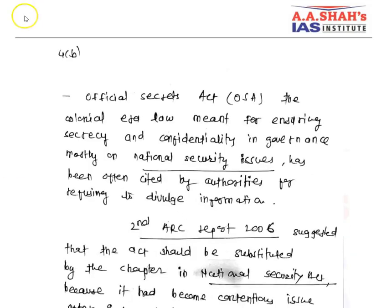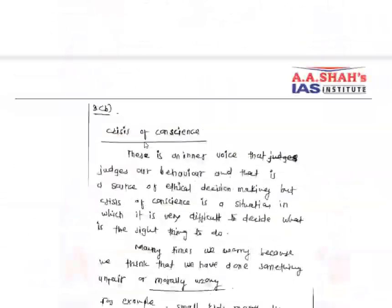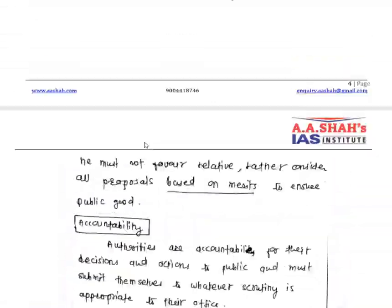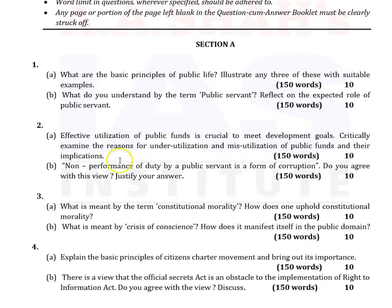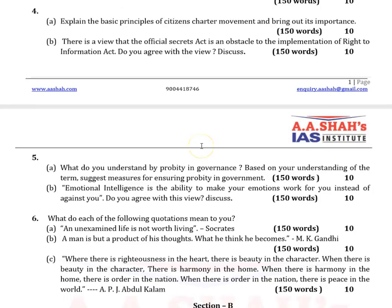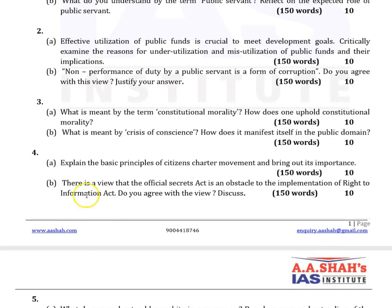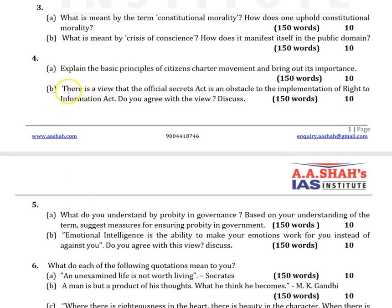Now question 4b, which was in the news and discussed in newspapers like The Hindu and Indian Express. The question is: There is a view that the Official Secrets Act is an obstacle to the implementation of the Right to Information Act. Do you agree with this view? Discuss.